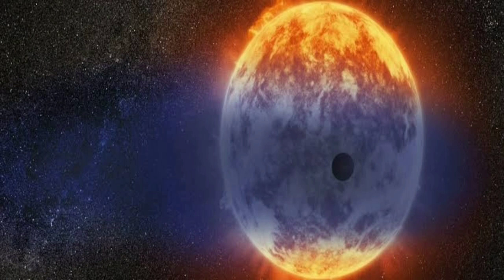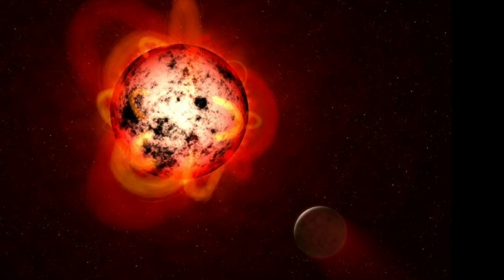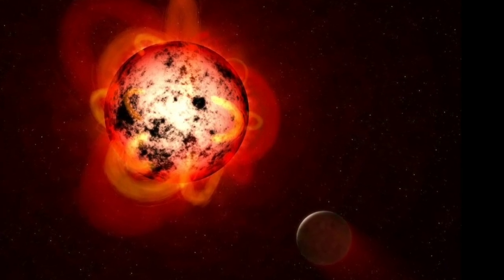We think Gliese 486b could have kept a part of its original atmosphere, despite being so close to its red dwarf star, says Dr. Montet. Whatever we learn about the atmosphere will help us better understand how rocky planets form.